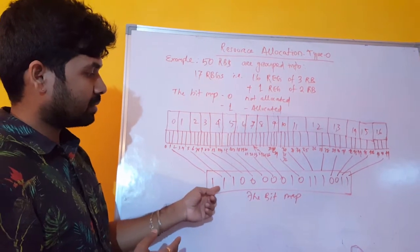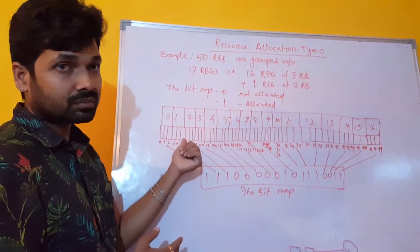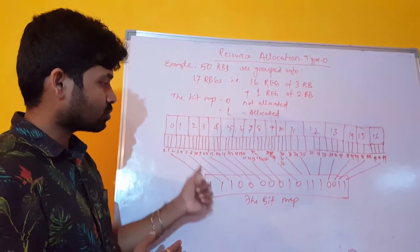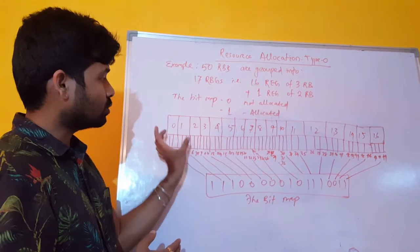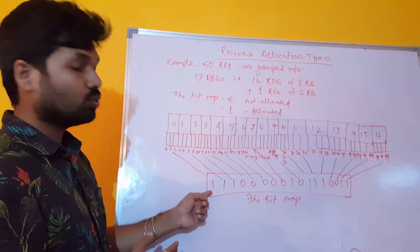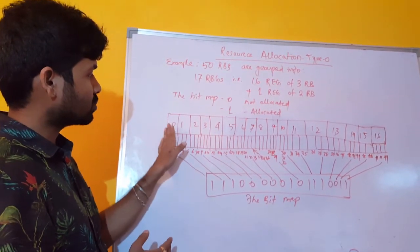Now bitmap, 1 bitmap for every resource element group. As I told, to save signaling resources, we are not addressing 1 resource block and 1 bitmap. Rather we are addressing 1 group with 1 bitmap. So first group is addressed through 1. That means allocated, resources allocated. This resource is allocated.